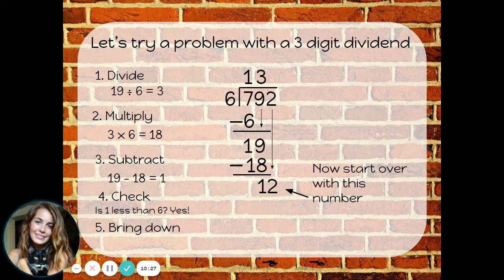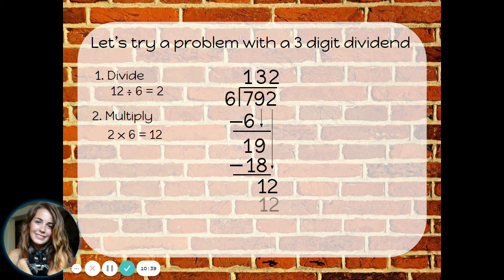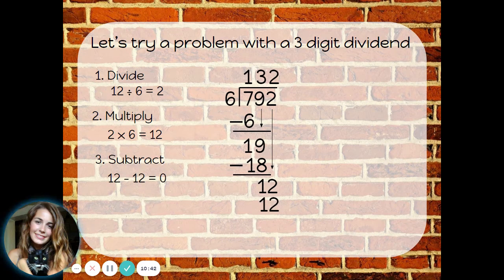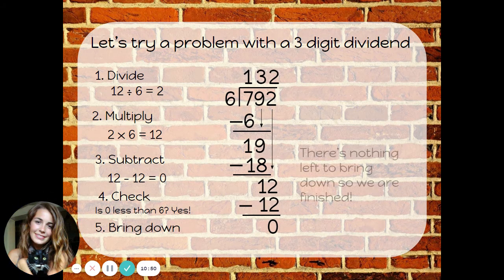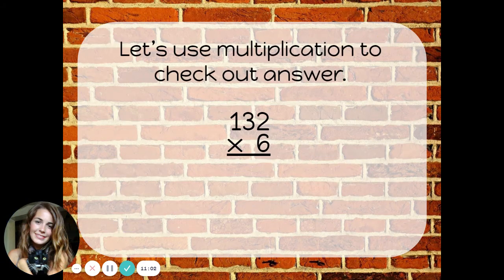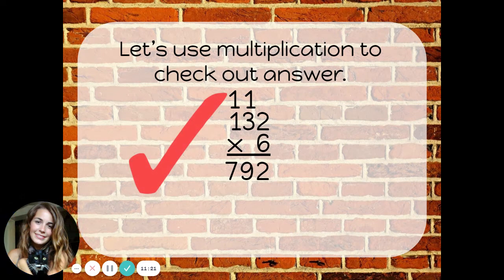I'm going to have to go through the steps again because I had an extra digit in my dividend. Starting over with 12: 12 divided by 6 is 2 — that one did work evenly. 2 times 6 is 12. 12 minus 12 is 0. Is 0 less than 6? Yes. Bring down — nothing left to bring down, so we are finally finished. We do not have a remainder because we ended up with 0 at the bottom. Our answer is 132. Let's use multiplication to check: 6 times 2 is 12; 6 times 3 is 18, plus 1 is 19; 6 times 1 is 6, plus 1 is 7. That was our dividend, 792. So we know our answer of 132 is correct.